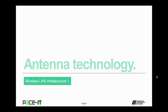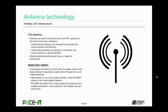Since we've covered the standards, let's move on to antenna technology. Antennas are used to broadcast and receive radio frequency signals and they fall into two basic categories. There are omnidirectional antennas, which are designed to broadcast and receive signals in all directions. Then there are unidirectional antennas, which are designed to broadcast and receive signals in a specific direction.